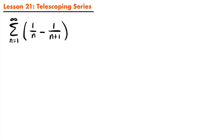The reason why this is a special type of series is because of the collapsing of those terms, it's going to be easy for us to determine what the series converges to. If we take a look at this series right here, we have the sum from n equals 1 to infinity of 1 divided by n minus 1 divided by n plus 1.